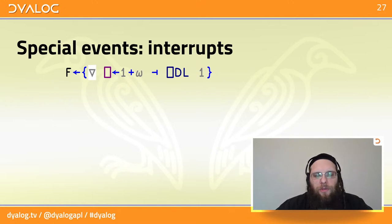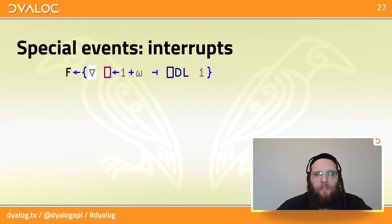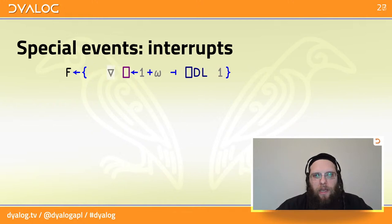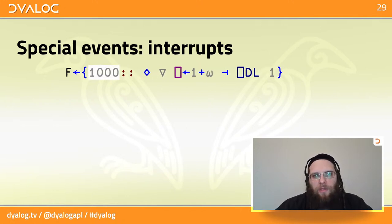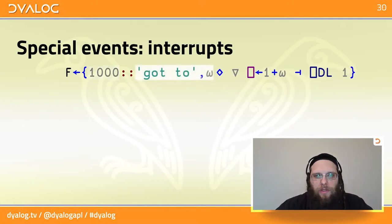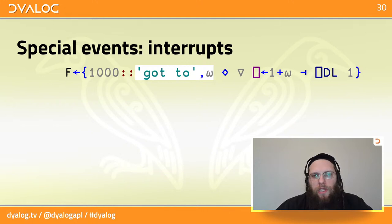If we issue an interrupt, APL would write an error message to the session — but we don't want that, we want to stay in control. So we add an event guard — number 1000, catching every type of interrupt. When it triggers, we take the argument (the last number printed) and prepend a message. This becomes a proper result to the function, so even though an interrupt happened, the function keeps running and can take further action.